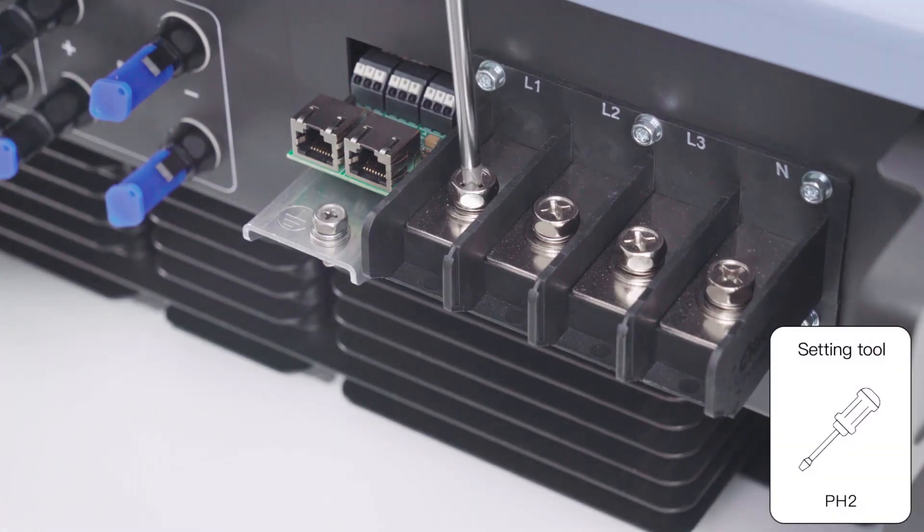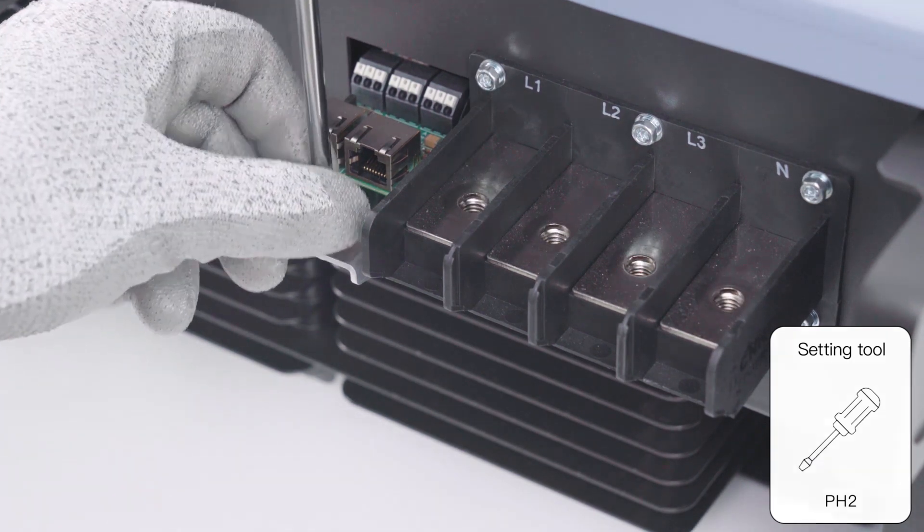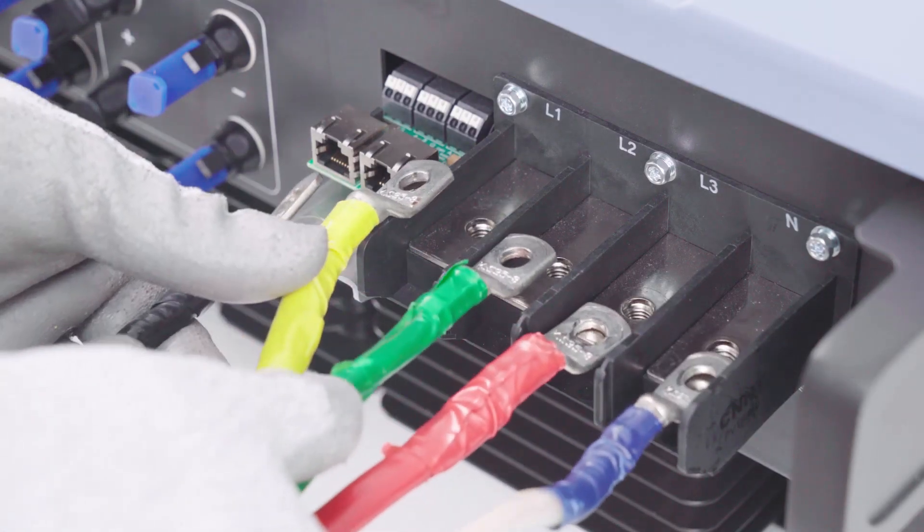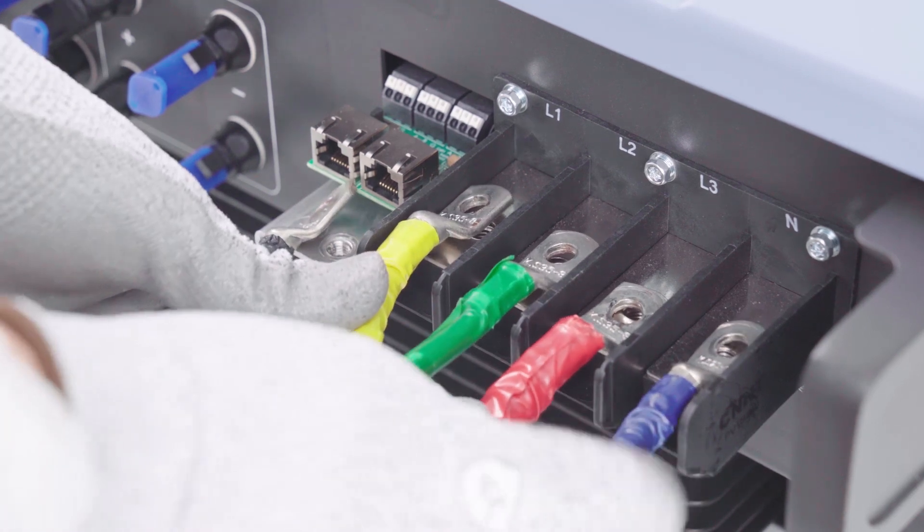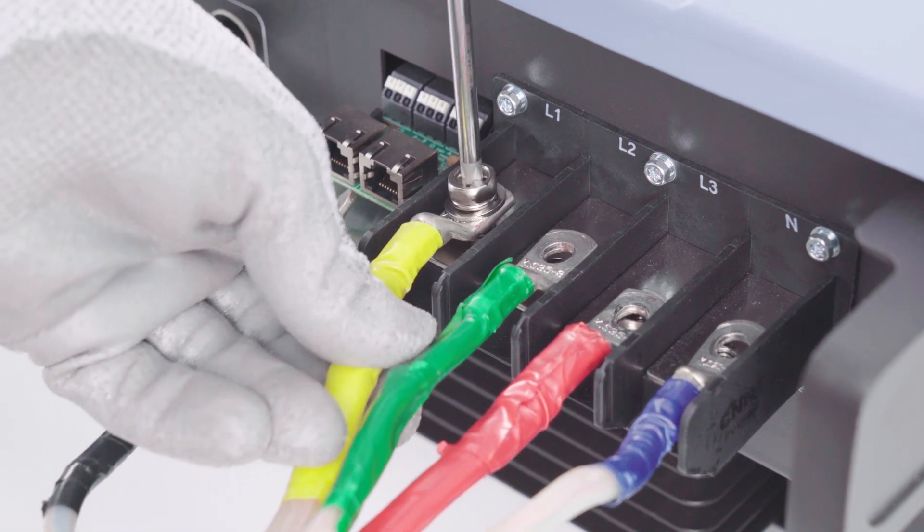Connect the grounding conductor to the protective grounding in accordance with the labeling. Connect N, L1, L2, and L3 to the terminal block for the AC cable according to the labeling.